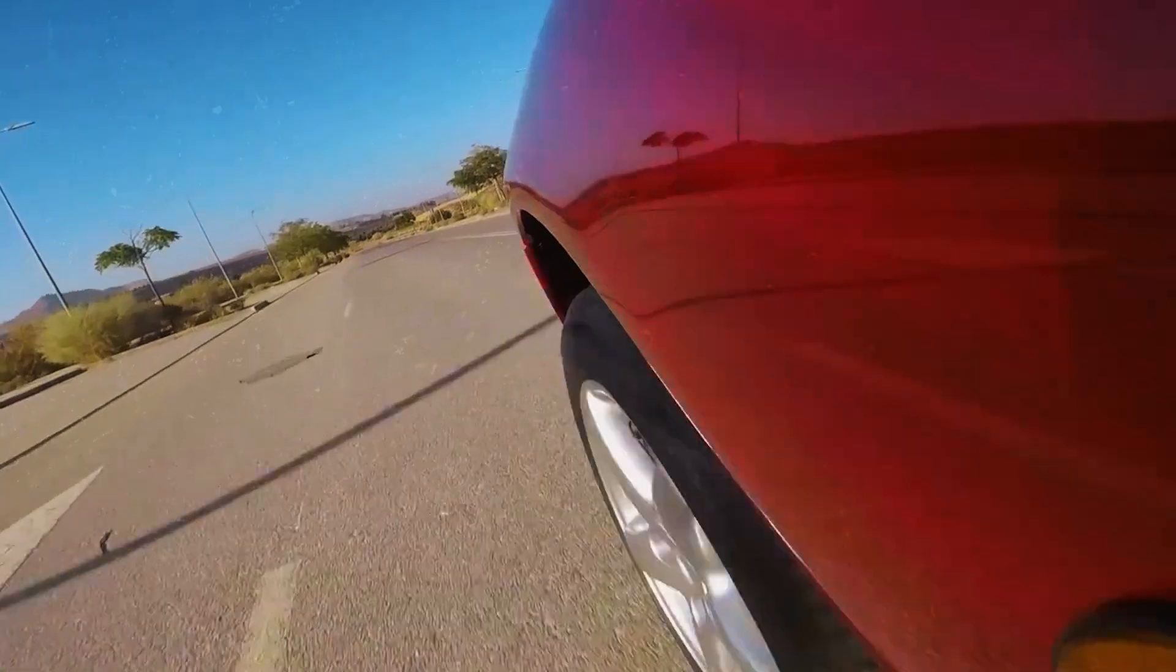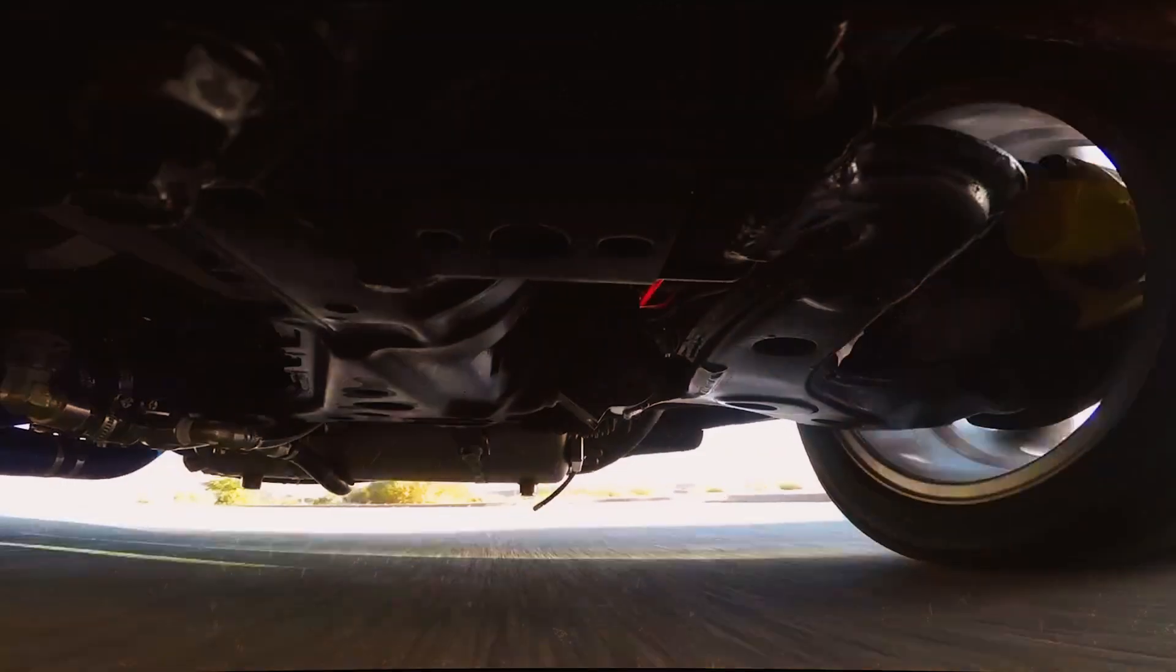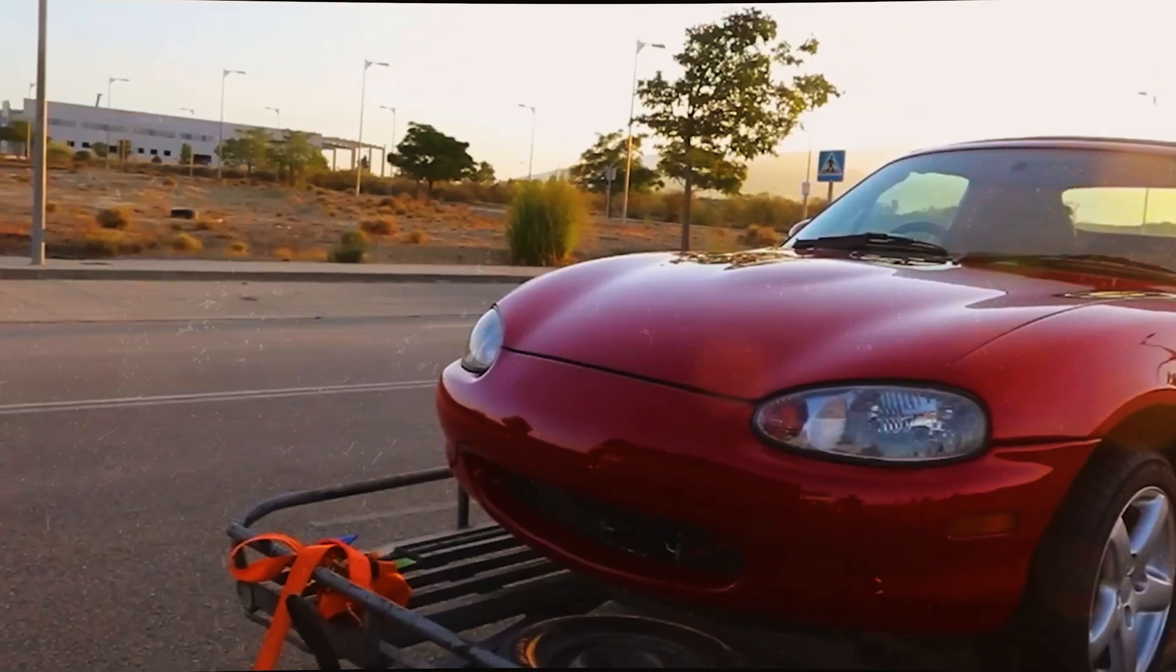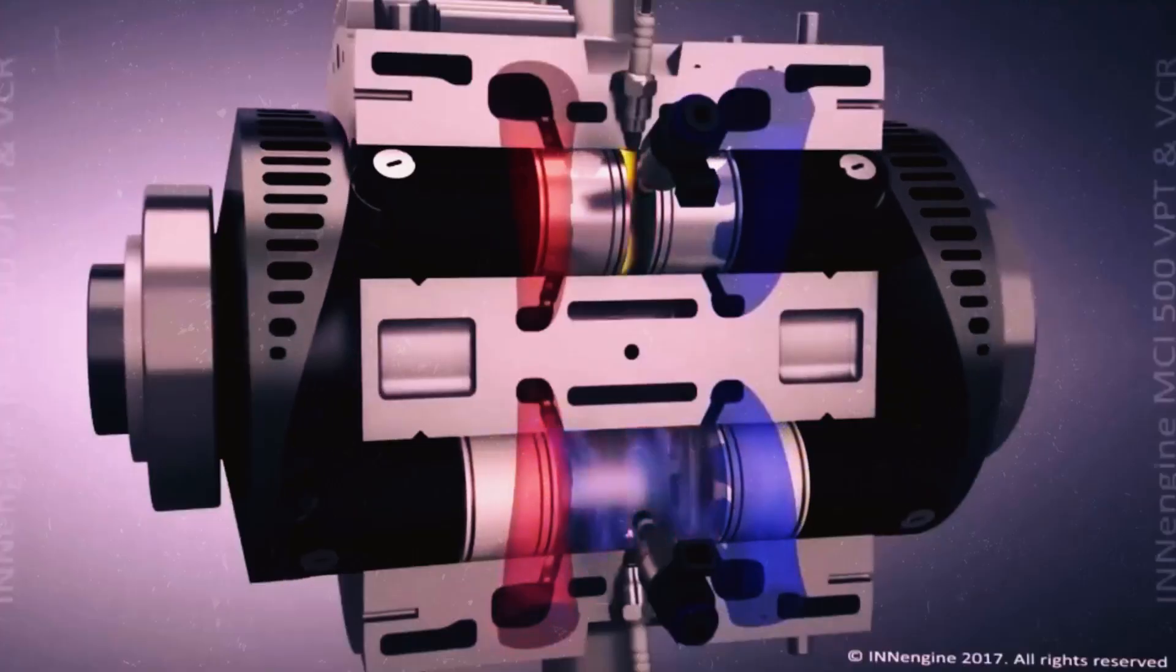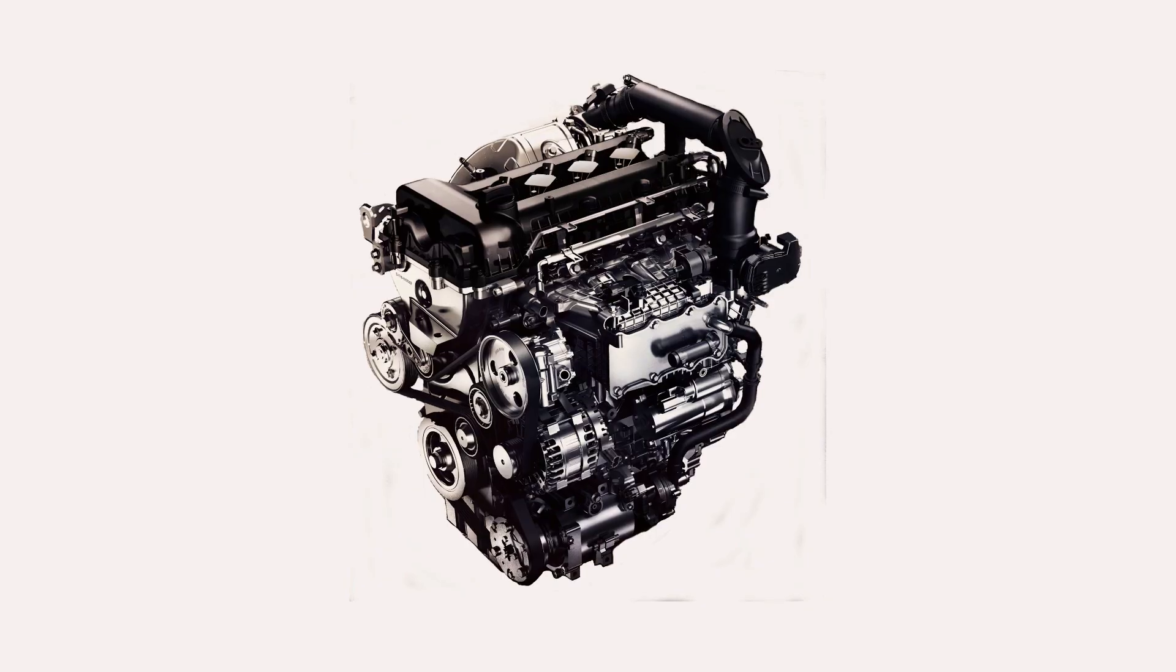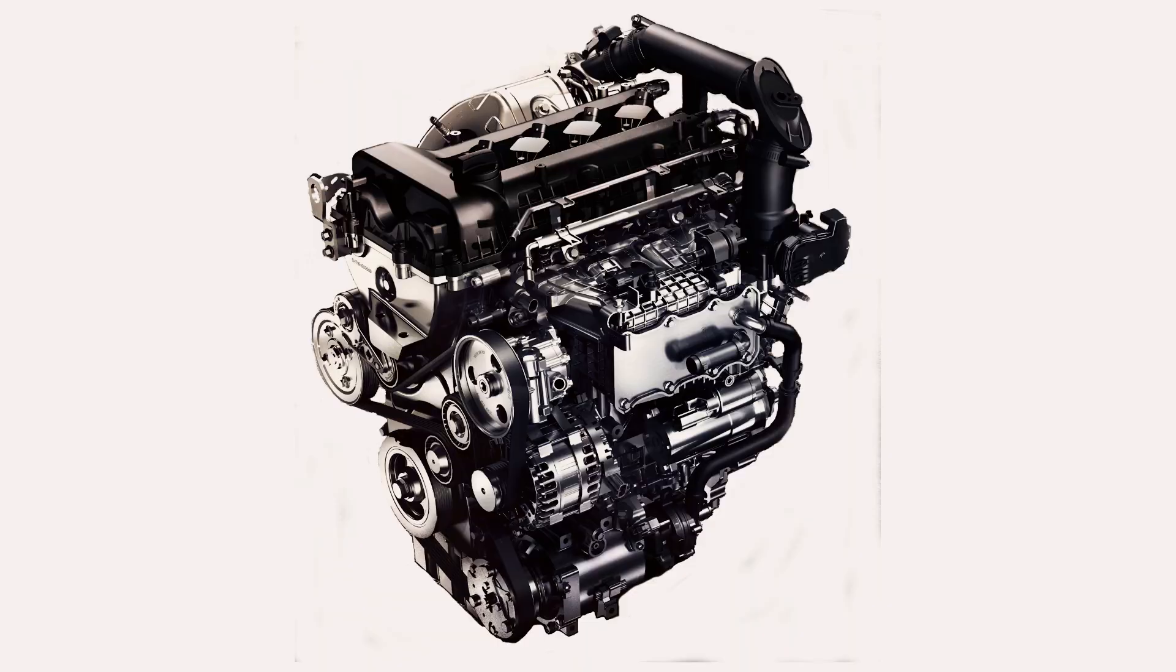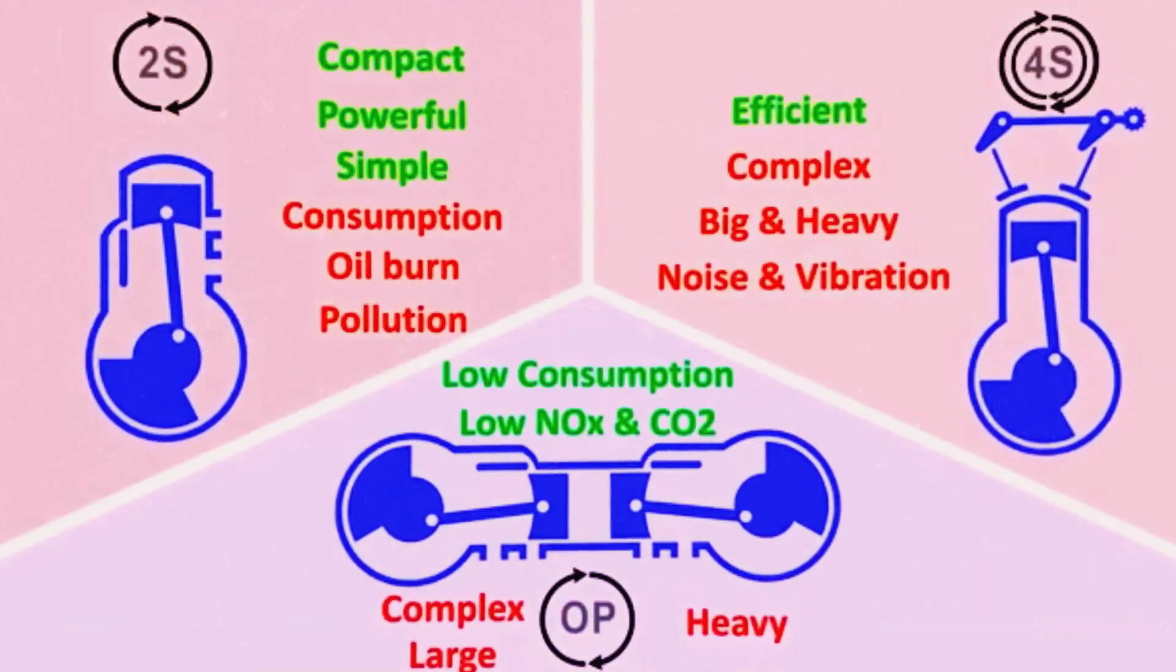Despite its modest 500 cubic centimeters and weight of 38 kg, the engine showcased performance on par with much larger engines, delivering 120 hp. It achieved 6,000 revolutions per minute and offered a torque of approximately 15.5 kg, all without the need for forced induction. Drawing a comparison, these specifications would be well-suited for a 1.5-liter four-cylinder engine.